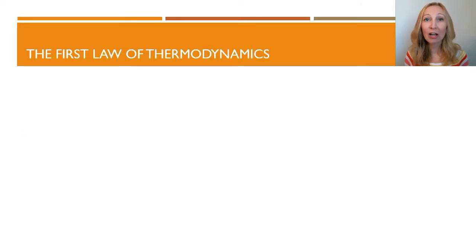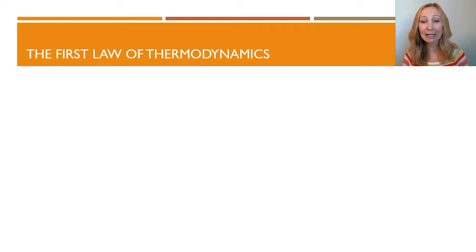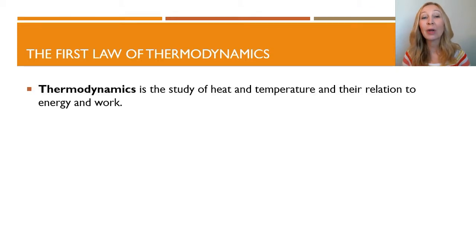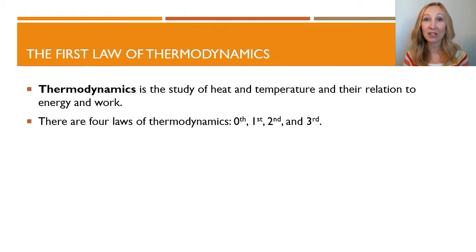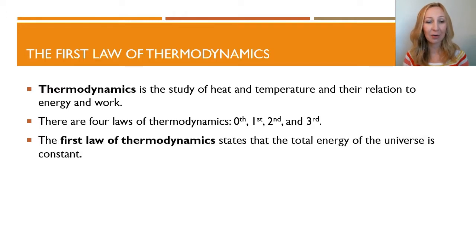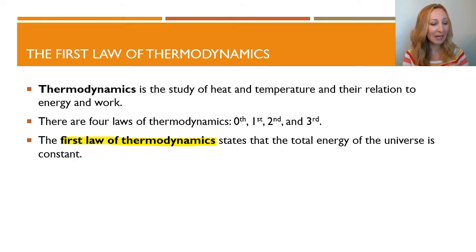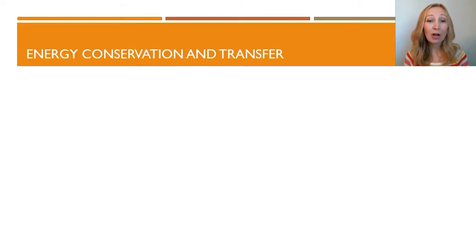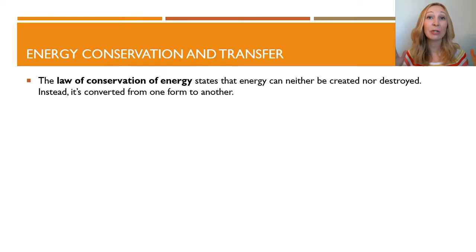Now we're going to take a look at some of the laws of thermodynamics, focusing on the first one. Thermodynamics is the study of heat and temperature and their relation to energy and work. There are four laws: the zeroth deals with thermal equilibrium; the first is conservation of energy; the second and third deal with entropy. The first law of thermodynamics states that the total energy of the universe is constant. The law of conservation of energy states that energy can neither be created nor destroyed — instead, it's converted from one form to another.